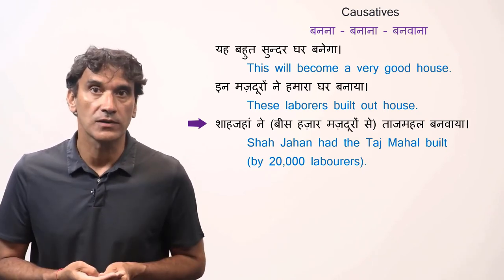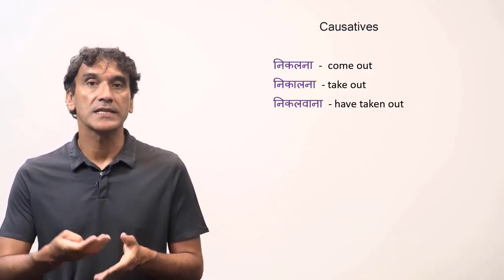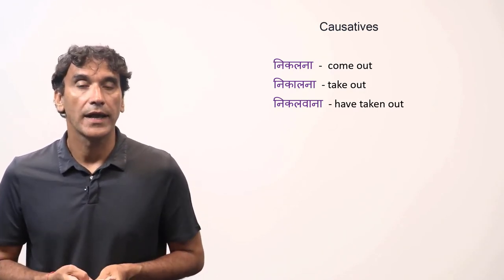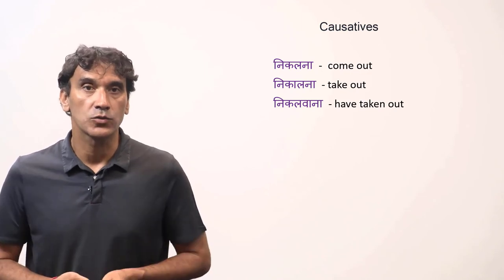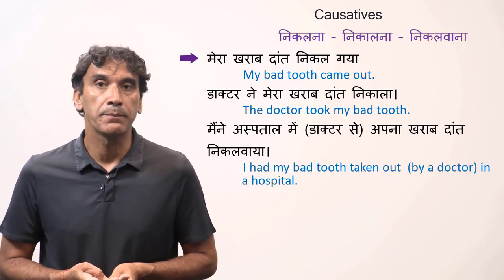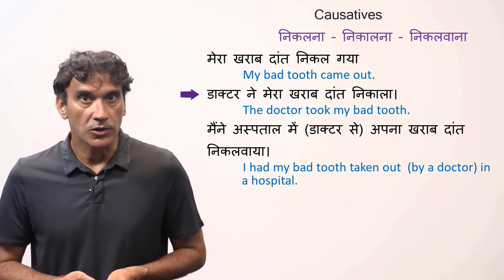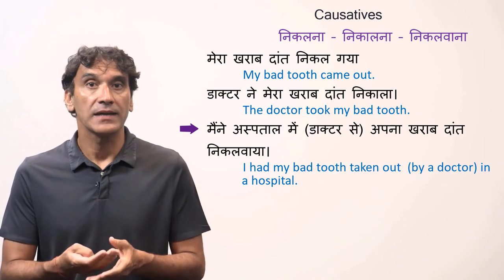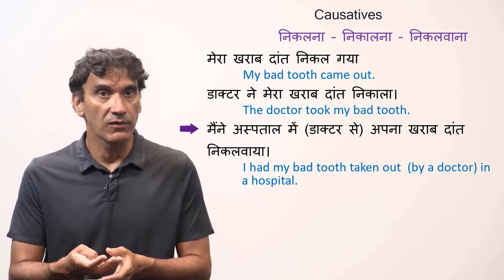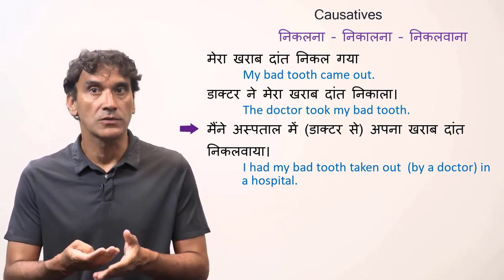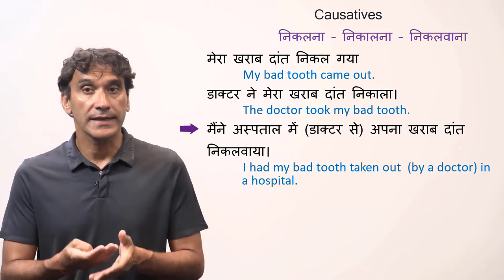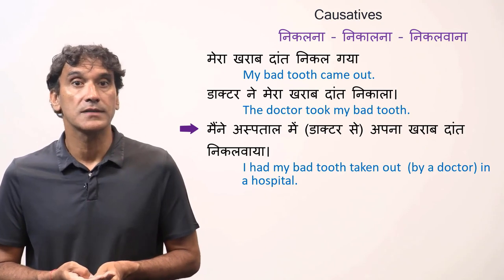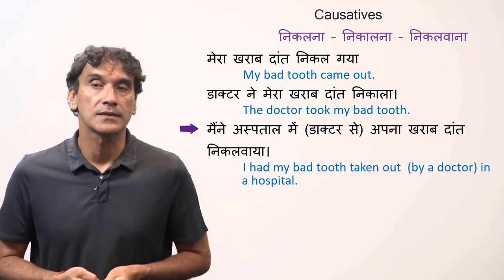The last set is nikalna — to come out, nikalana — to take out, and nikalwana — to have taken out. Mera kharaab daant nikal gaya: my bad tooth came out. Doctor ne mera kharaab daant nikala: the doctor took my bad tooth out. Maine aspataal mein apna kharaab daant nikalwaaya: I had my bad tooth taken out in the hospital. In the second causative example, the agent — the doctor — is not necessary for the context. It is understood, so usually it is not uttered.